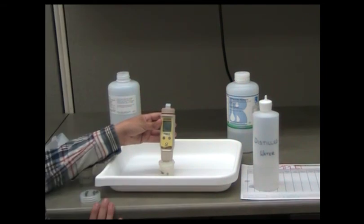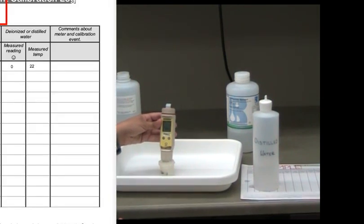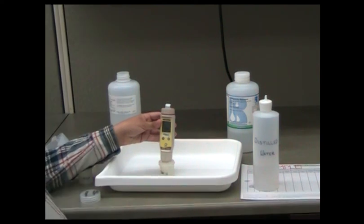This value ought to be zero. If tap water or spring water is used for this step, the reading on the meter will not be zero. Record the temperature displayed on the screen. You have now completed the calibration process for the EC tester.